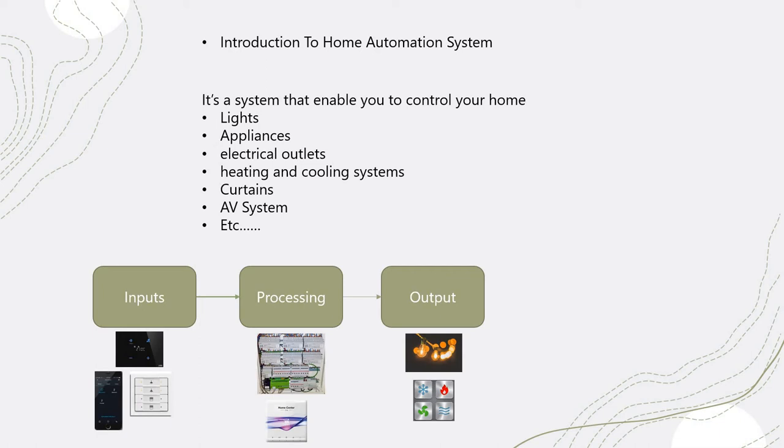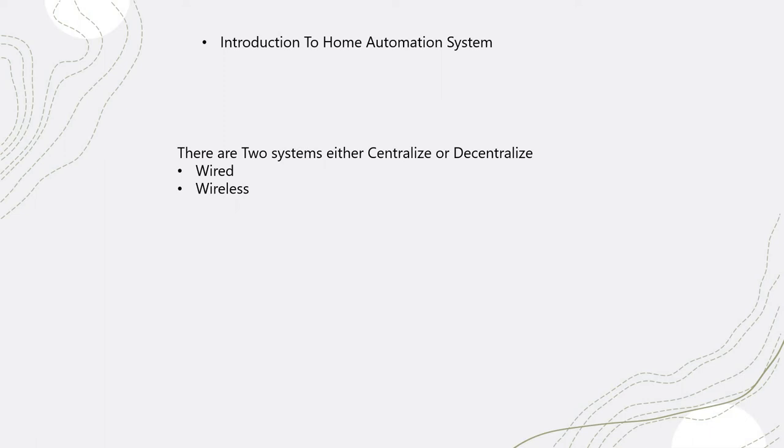Then it goes through the processor. The processor could be a DB installed in a wall containing many devices for controlling different applications, or you can have a hub if you're using a wireless solution. The output can be controlling lights, HVAC systems, audio systems, or playing a movie through the AV control system.